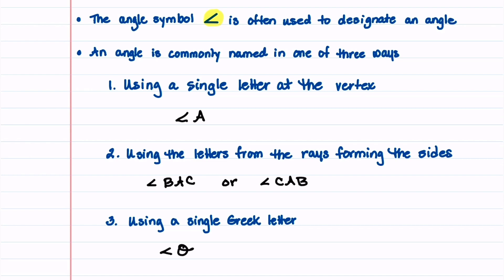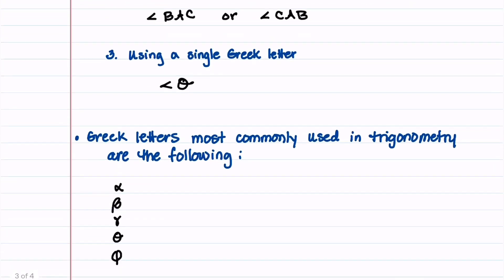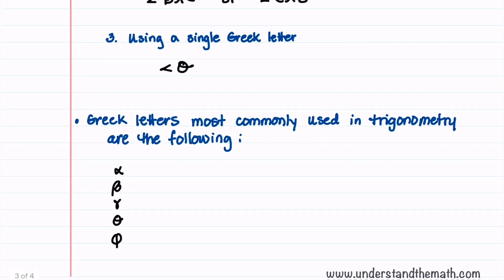Let's now briefly go over some of the Greek letters that are most commonly used in trigonometry. The first one we'll label as alpha. The second one we'll label as beta. The third one is gamma. The fourth one is the one that we just used, and this is the most common one to use in trigonometry, and this is called theta. And then the last one is called phi. That one I think is one of the hardest ones to remember.